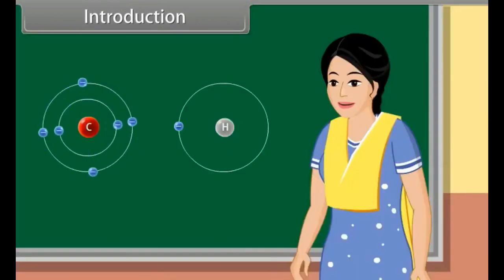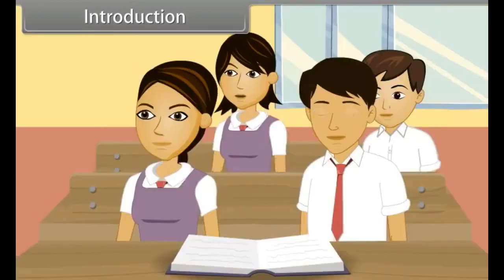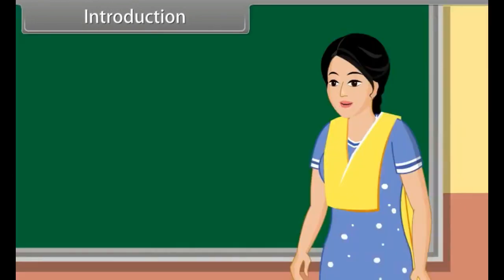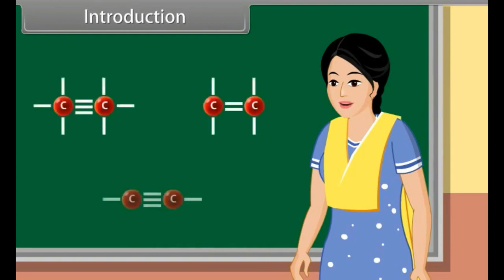Organic chemistry is the branch of chemistry that involves the study of carbon and hydrogen-containing compounds. The carbon-carbon atoms are attached by single bond, double bond, or triple bond, and the functional group present on the organic compound decides its chemical nature.